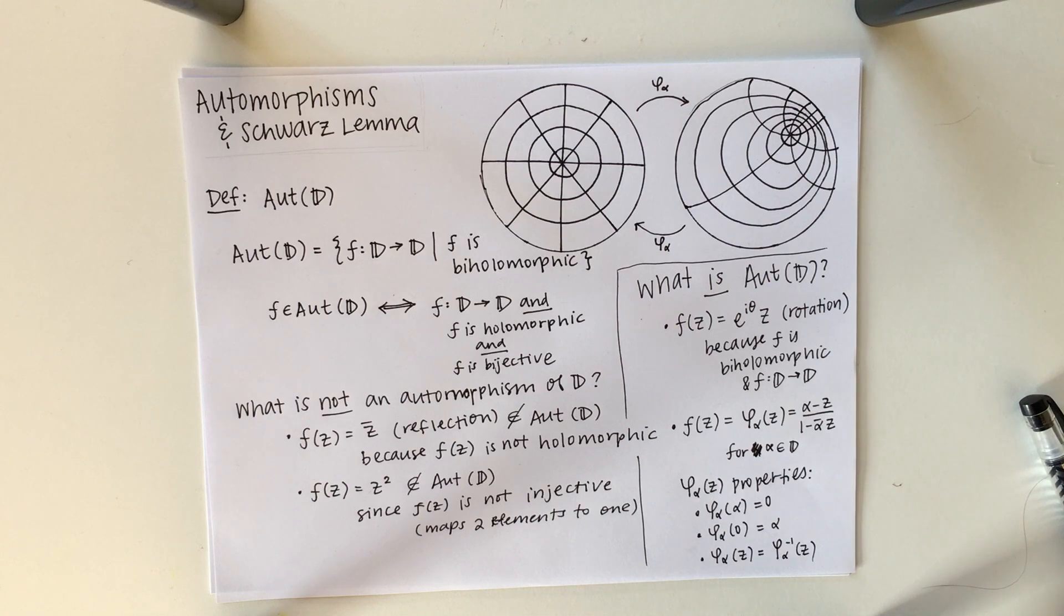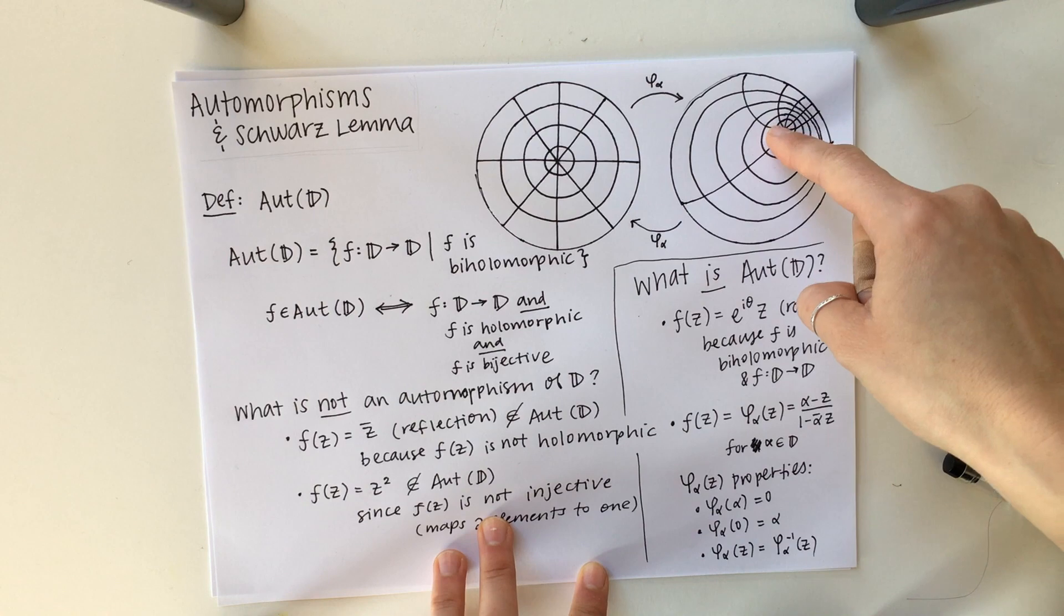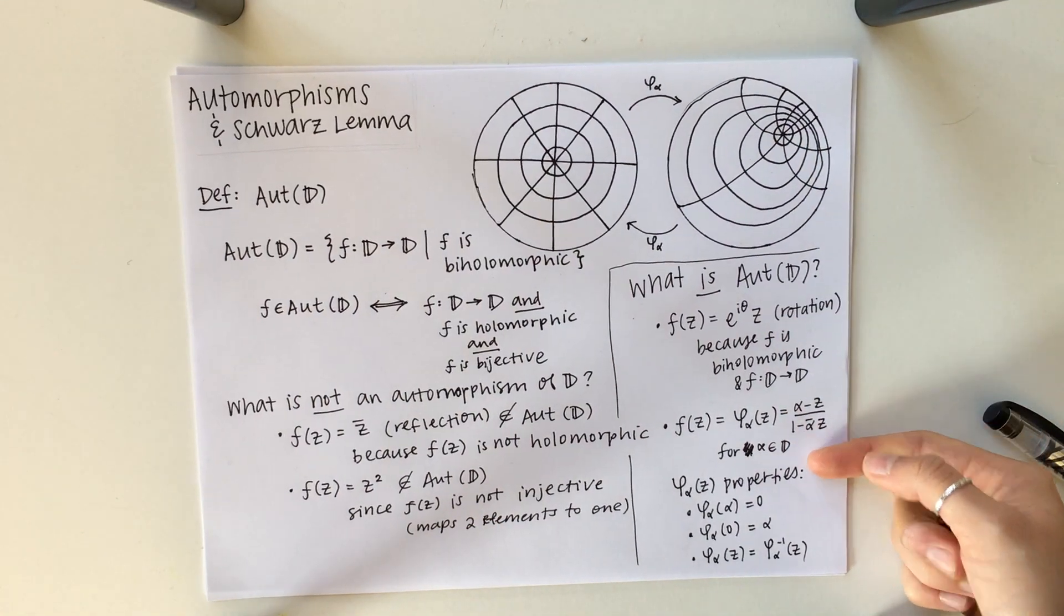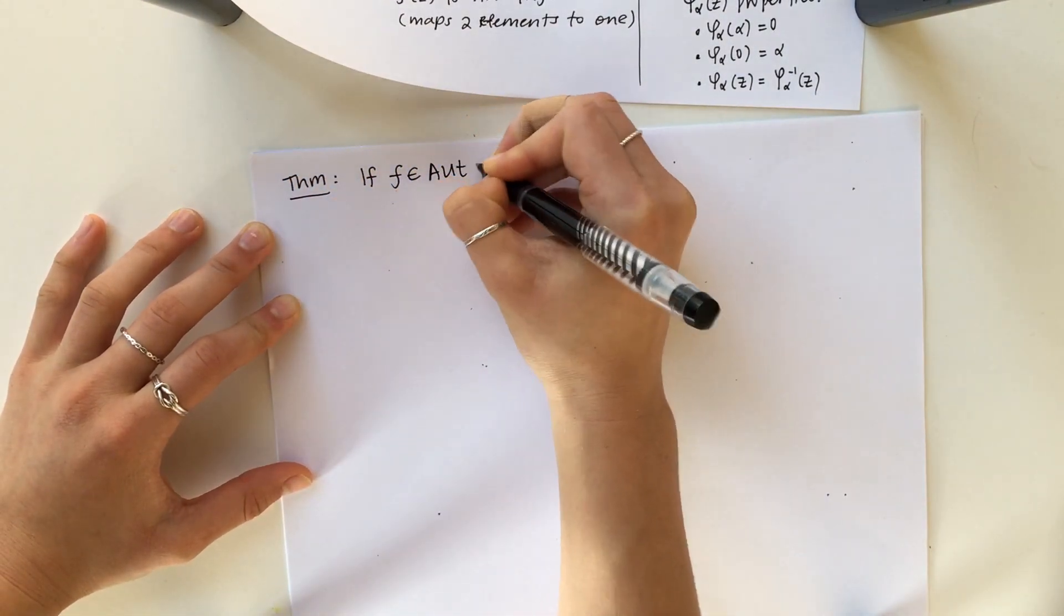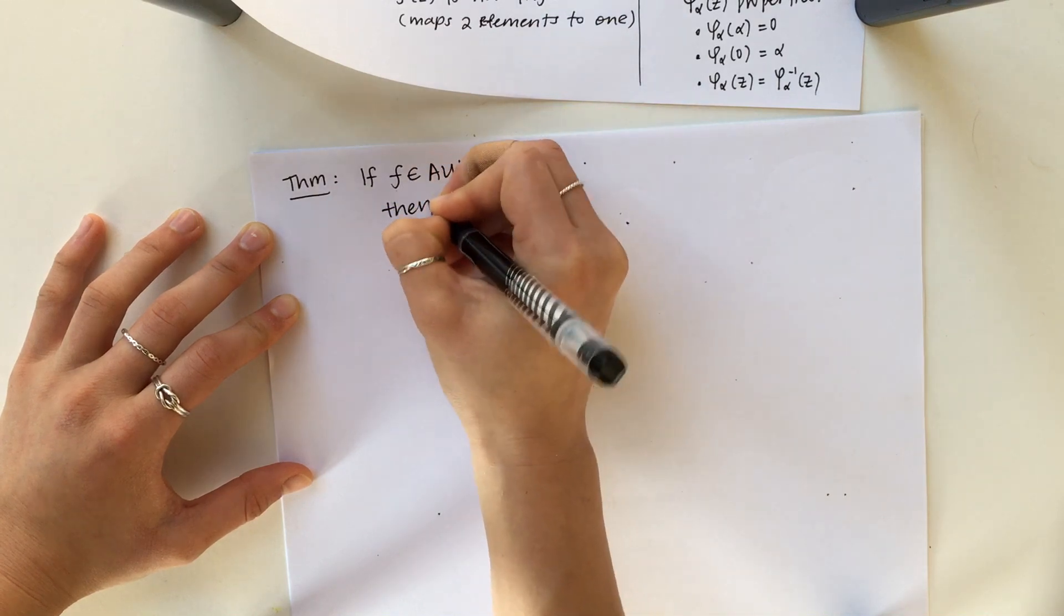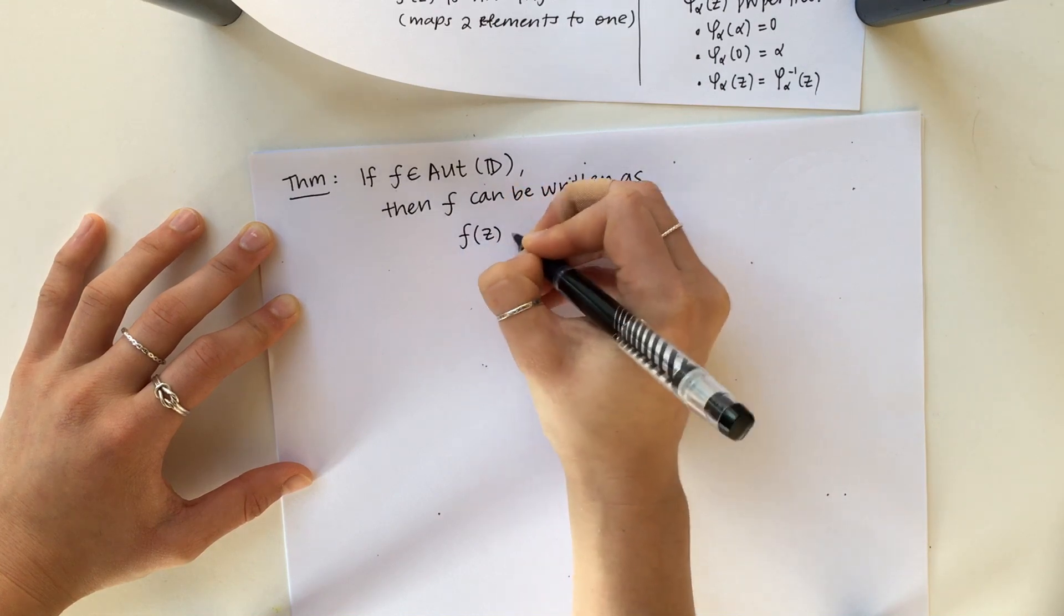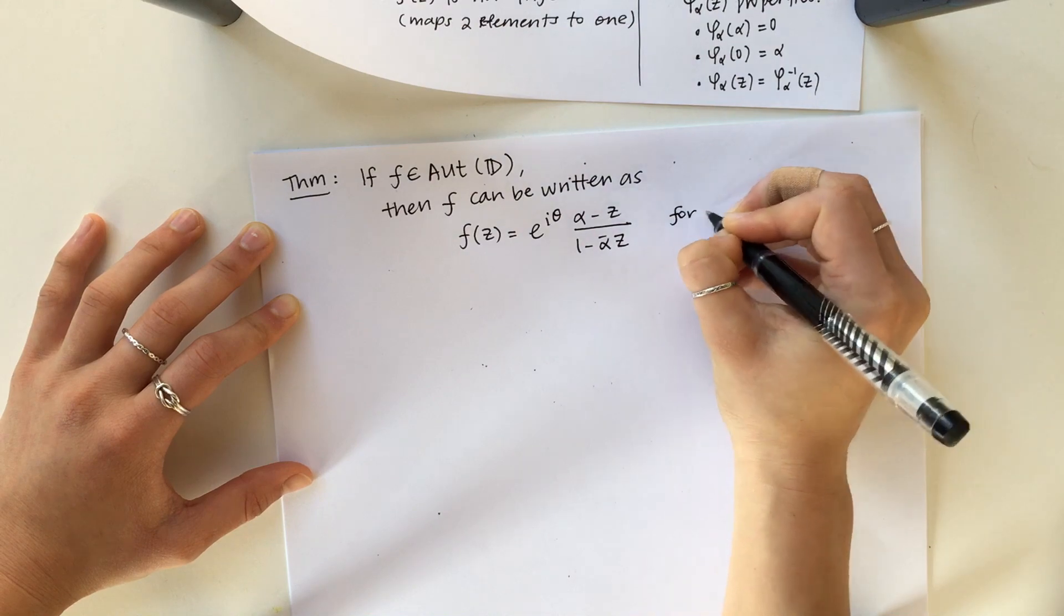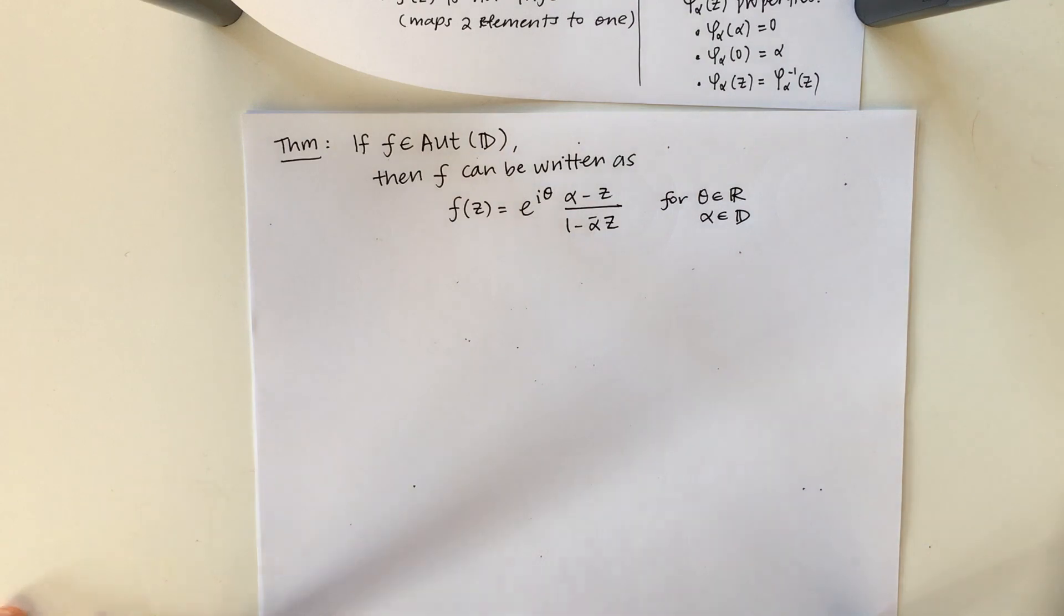You can combine both of these automorphisms and rotate your phi sub alpha image. So imagine centering at alpha and then rotating, and that would be a composition of these two, which leads to a very important theorem that actually all automorphisms can be written as a composition of the rotation and phi sub alpha. The theorem says if F is in the automorphism of D, then F can be written as the composition of the rotation and phi sub alpha for any real theta and an alpha contained inside the disk.